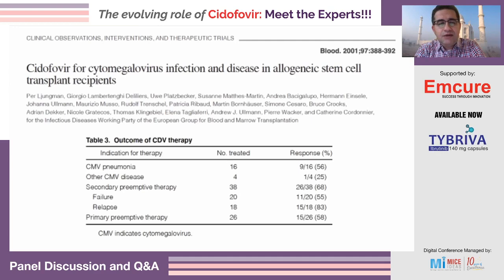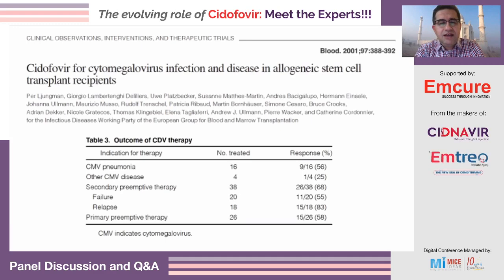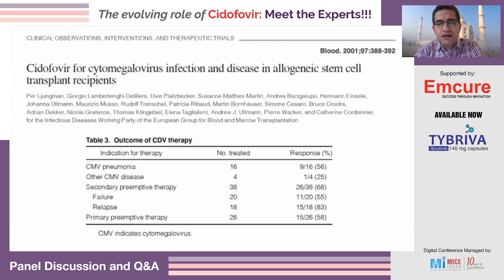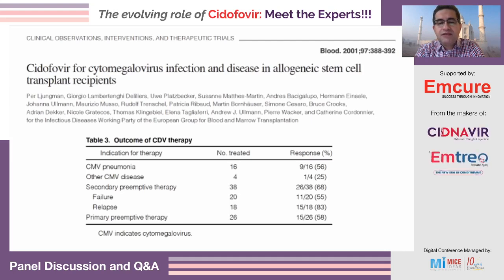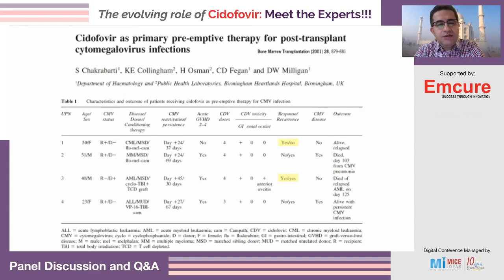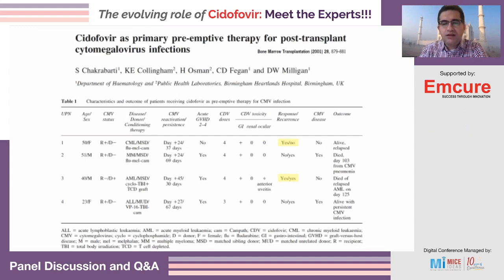The 2001 URTC collection of cases treated in Europe for CMV disease — preemptive therapy, either secondary or primary — showed a response rate that was not great: 56% for pneumonia, 25% for other diseases, with a response for secondary preventive therapy but failure in a fair number of patients. Another case series from England used it in four patients: two responded and two didn't, and of those who responded, one did not recur while the other did.